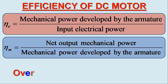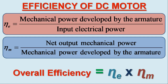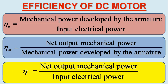Multiplying these two efficiencies, we may determine the overall or commercial efficiency of the DC motor. Thus, the overall or commercial efficiency of the DC motor will be net output mechanical power over input electrical power. A detailed discussion on the overall efficiency calculations will be made in the next video lecture.